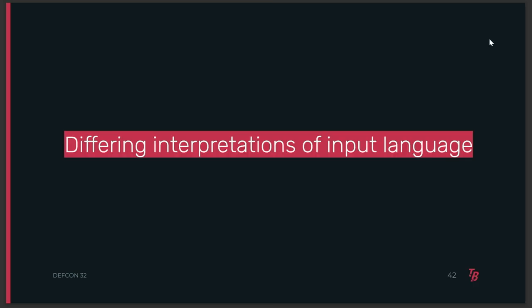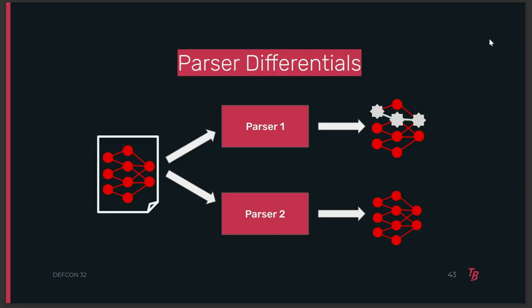Now we can talk about parser differentials. This happens when different parsers in a system read the same input but interpret it differently. When two parsers interpret the same file in different ways, that file is known as an ambiguous file — this is a very common exploit technique. It means you can create an ML model file that is benign for one system component but backdoored for another. Whether or not this is impactful depends on your system, so that's where you want to do threat modeling.